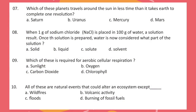Question 6. Which of these are caused primarily by gravitational force between Earth and the moon? Question 7. Which of these planets travels around the sun in less time than it takes Earth to complete one revolution? Question 8. When 1 gram of sodium chloride (NaCl) is placed in 100 grams of water, a solution is formed. Once the solution is prepared, water is now considered what part of the solution?